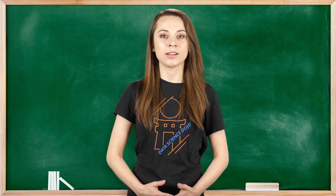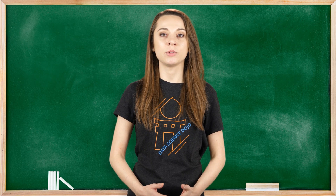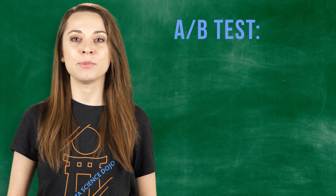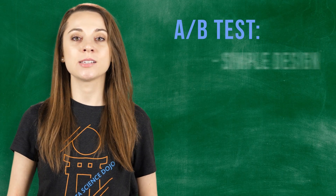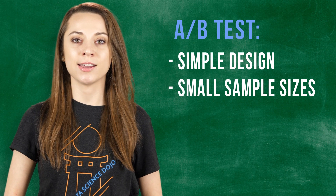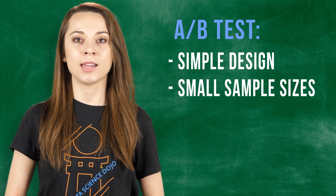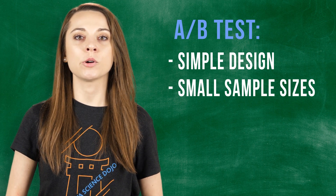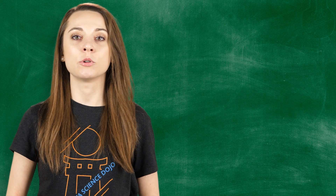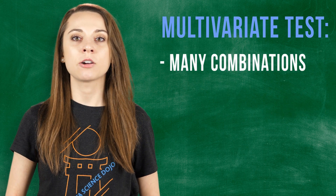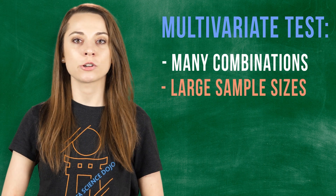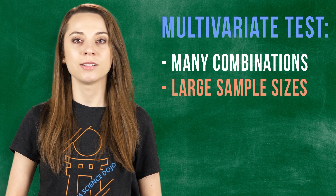So what are some common advantages and disadvantages to doing A-B versus multivariate testing? When running an A-B test it will be simple in design and a small sample size may be okay. The limitation is that you're only testing one alternative. When conducting a multivariate test you can test many combinations at once; however, you will need a much larger sample size to run your experiment.